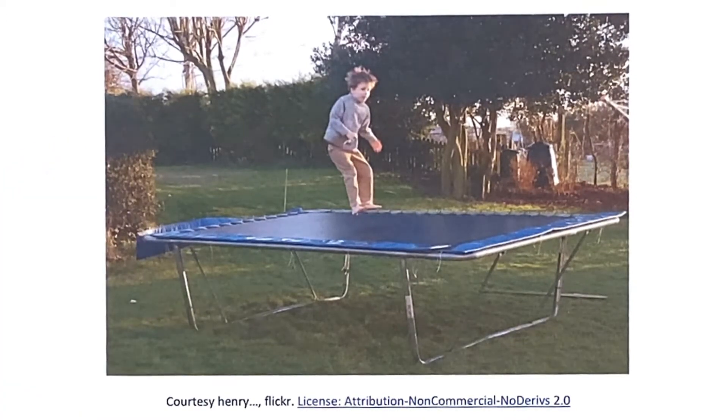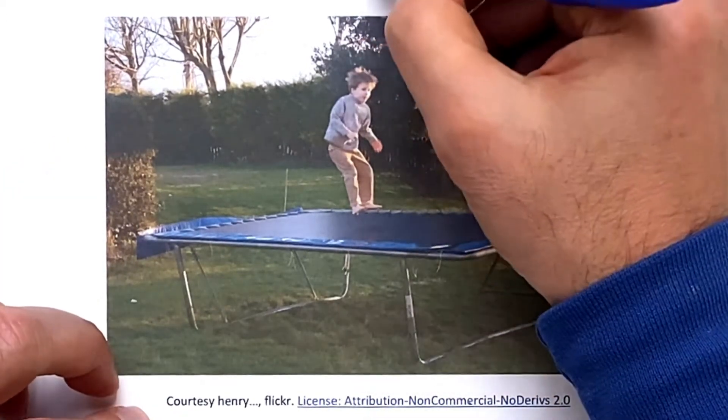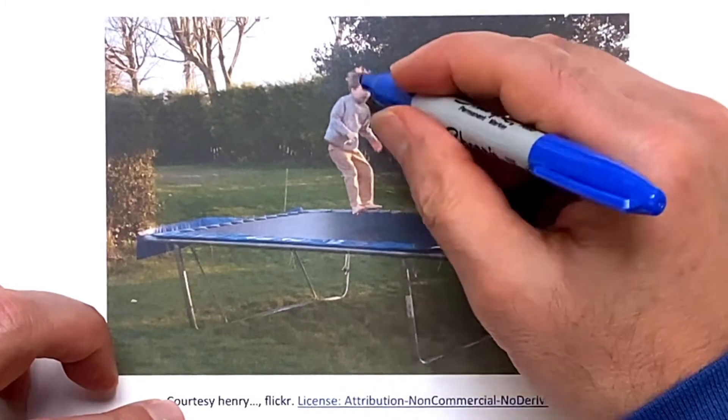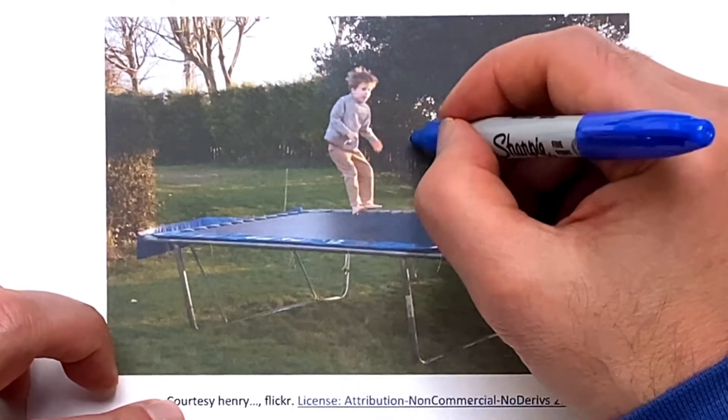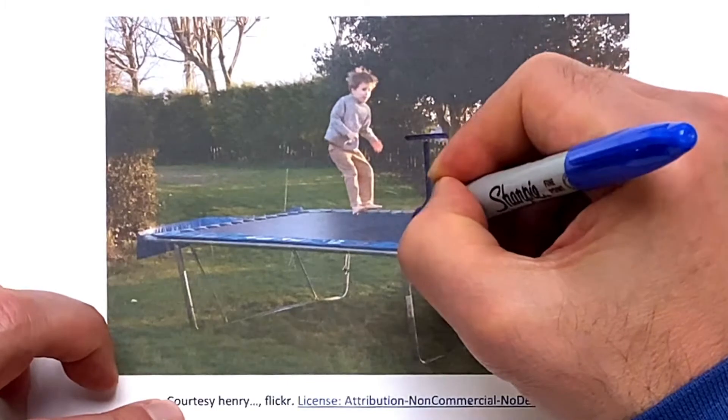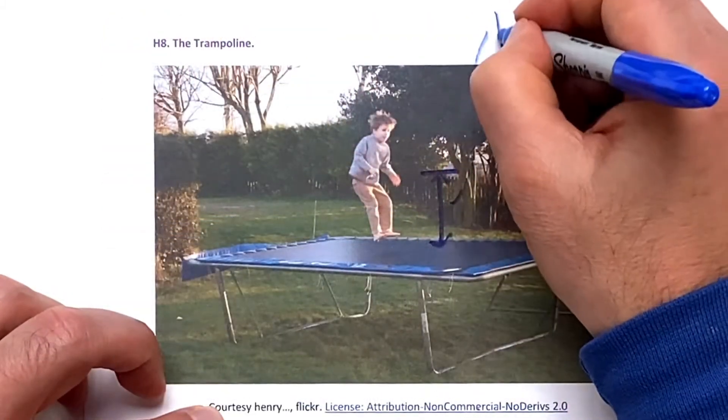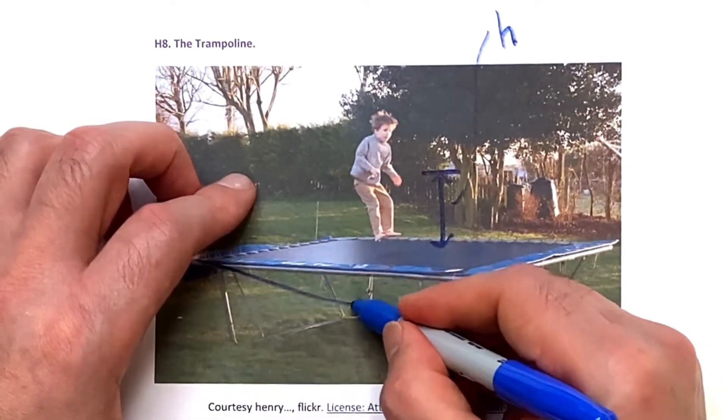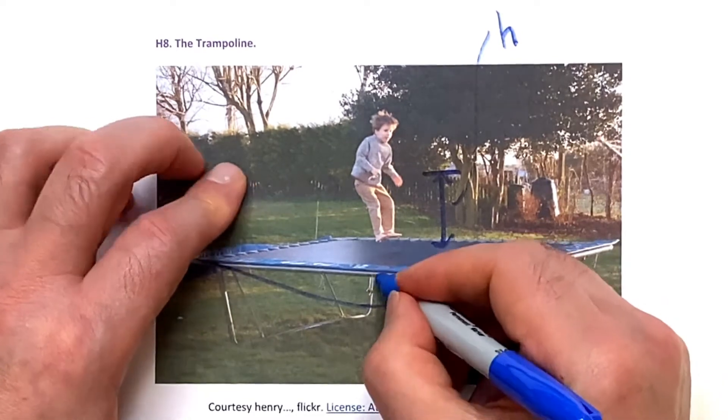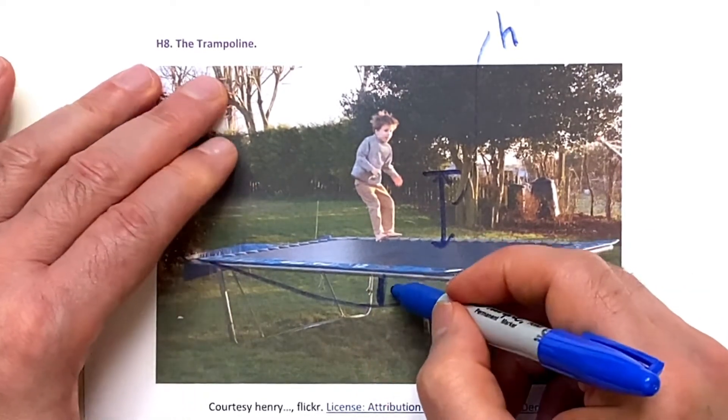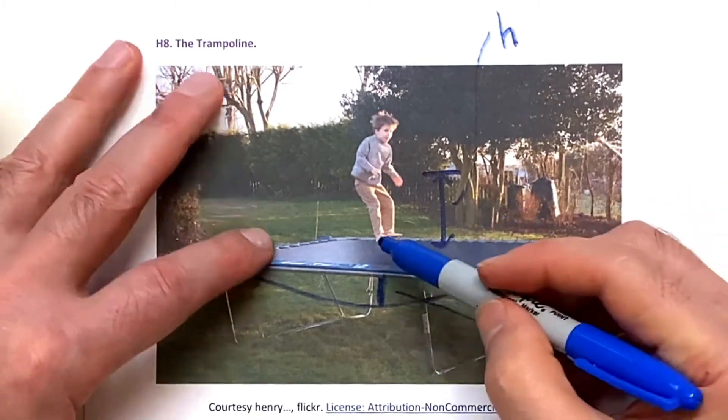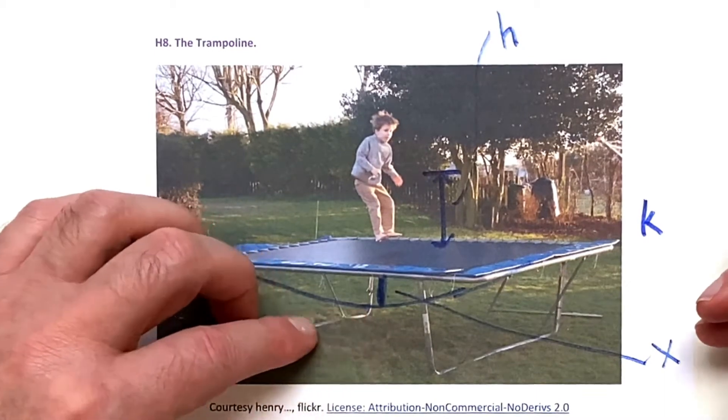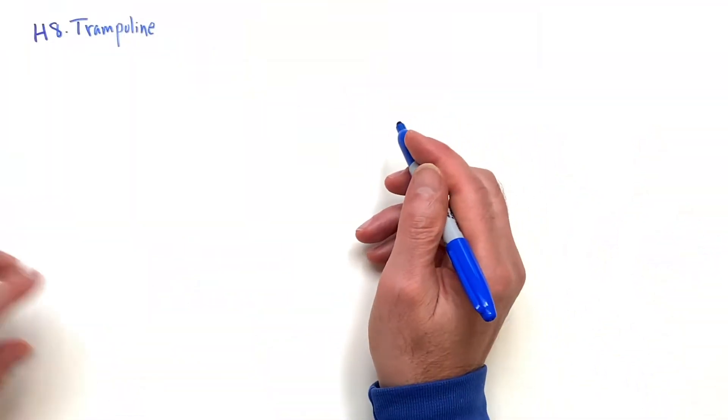So here we have the trampoline. We're going to have the person come down from a certain height. The person is in the process of falling down, but let's say this was the height. Then this is going to sag a little bit, and we want to know what is the distance x that it's going to sag if you're given the spring constant. So let's work out this problem, the trampoline.